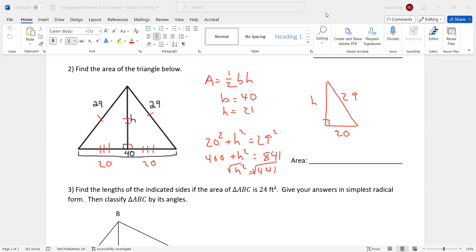So I get, change color so you can see what I'm doing here. 40 times 21 divided by 2. I get 420 units squared. And that is all of that problem.